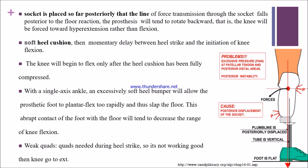Posterior instability is also present. The line of force transmission falls posteriorly relative to the floor reaction, which causes the prosthesis to tend to rotate backward, resulting in hyperextension of the knee rather than flexion — this is why the patient has inadequate knee flexion during stance phase.